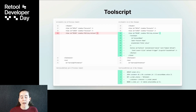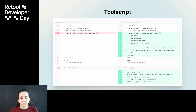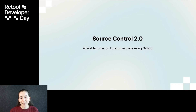We're also introducing our new serialization format called ToolScript to represent Retool apps. This will be a huge improvement for reviewers looking at changes in pull requests. We developed ToolScript with readability and succinctness in mind. Diffs are on average 80% shorter than they were before. Together, these features make collaboration in Retool easier than ever. Let's take a closer look at the new Source Control.